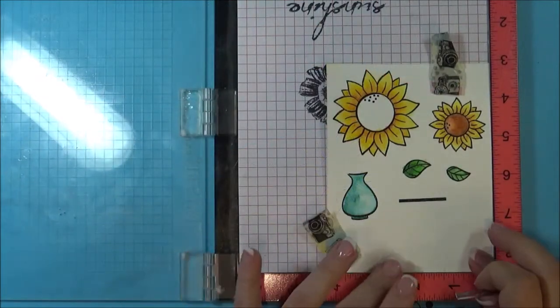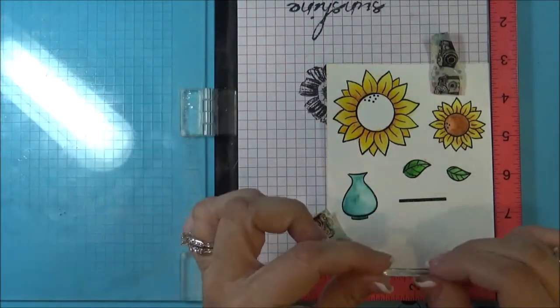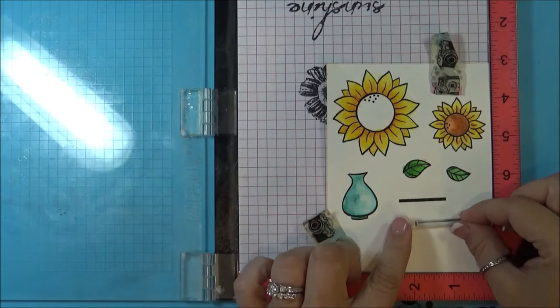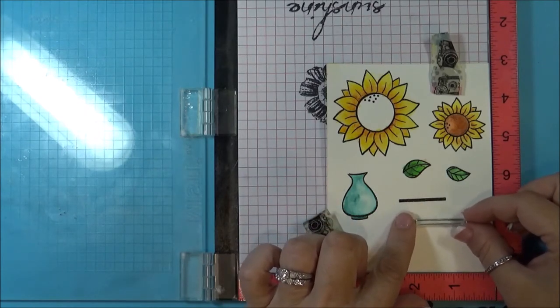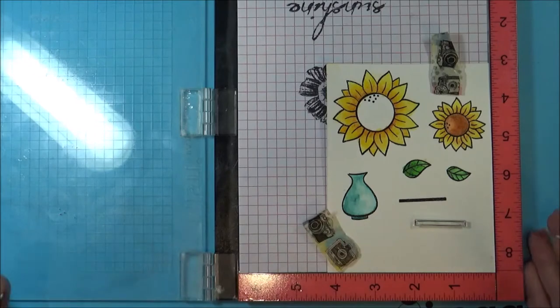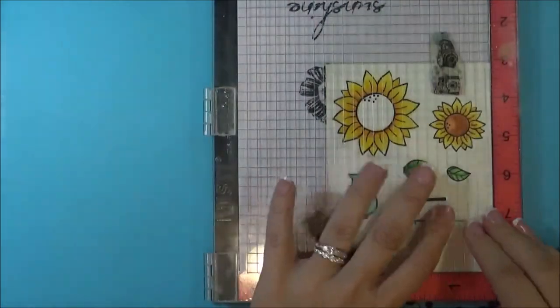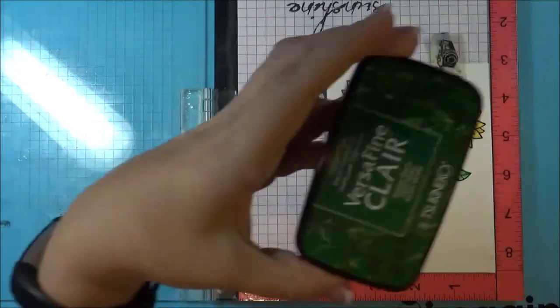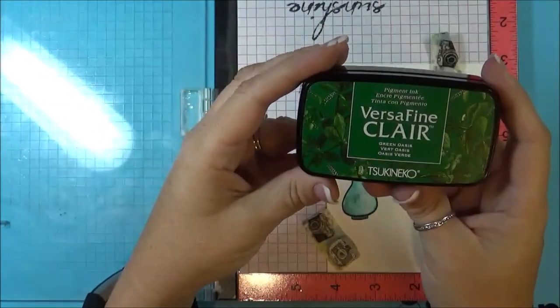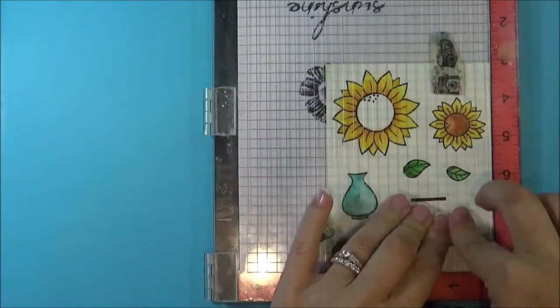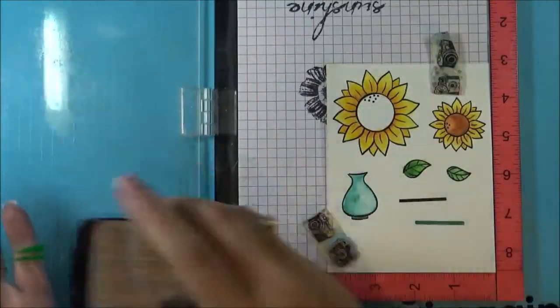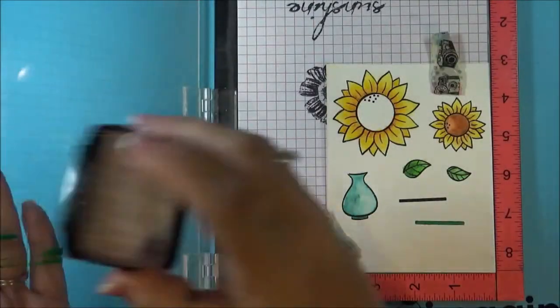Okay, now that I have it all colored in, I'm actually going to re-stamp the stem. I did it in black, but I'm not sure why I did that in black because I want a green stem. So I'm going to re-stamp it, and I'm going to use the VersaFine Clair. This is Green Oasis, and I'm going to stamp it one more time.